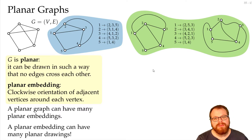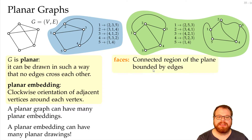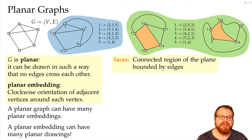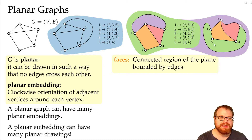If we have a planar drawing, then this defines faces. A face is a connected region of the plane that's bounded by the edges. In this example, this here would be a face, and we get the same face in both drawings of the same combinatorial embedding. We have this face, this face, this face, and this face.